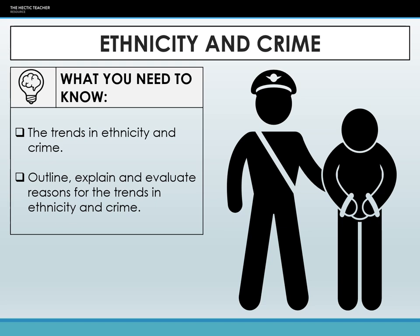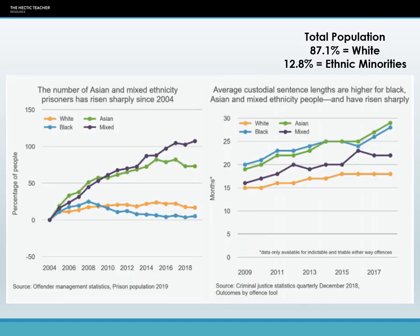If we first look at some of the trends, this is data from 2018–2019. We have to be cautious with data from 2020 and 2021 due to COVID mitigations, but in 2019, if we look at the population in general, 87% of the UK population considered themselves white, which left 12.8% as ethnic minorities — covering Afro-Caribbean, Asian, Middle Eastern, and many other ethnicities.